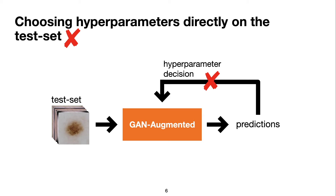The first problem is about choosing hyperparameters directly on the test set. This happens, for example, if you use your GAN-augmented model's predictions over the test set and make use of such results to take decisions on hyperparameters. This of course uses privileged information and should always be avoided.